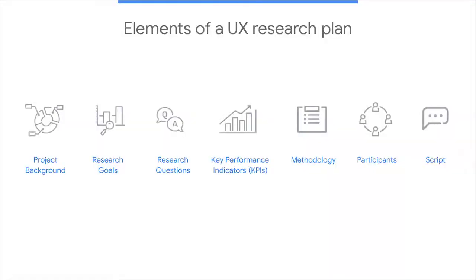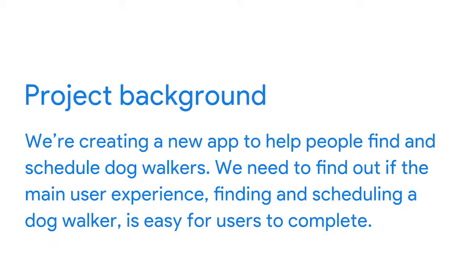The first element of your plan is the project background, which answers the question: what led you to conduct this research? You don't have to provide a long, drawn-out history — just a few lines is good. For example: we're creating a new app to help people find and schedule dog walkers. We need to find out if the main user experience — finding and scheduling a dog walker — is easy for users to complete.